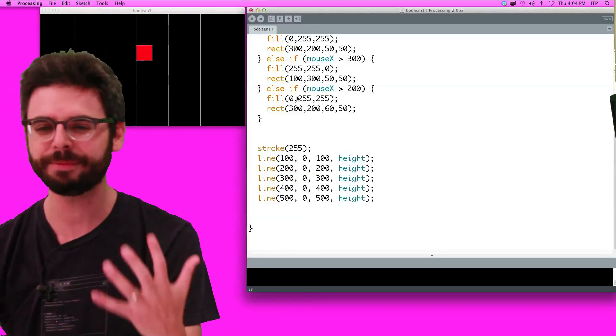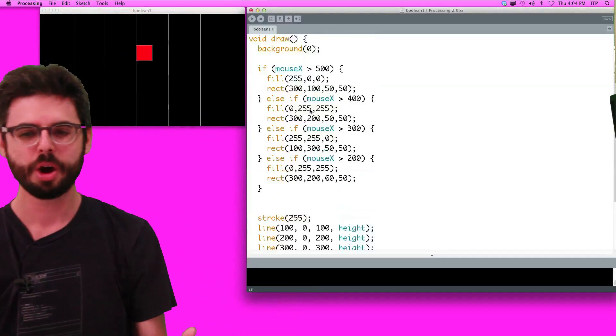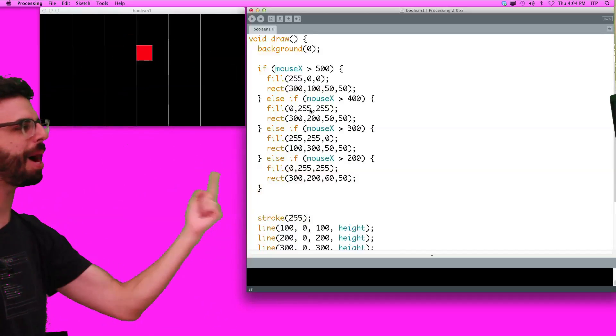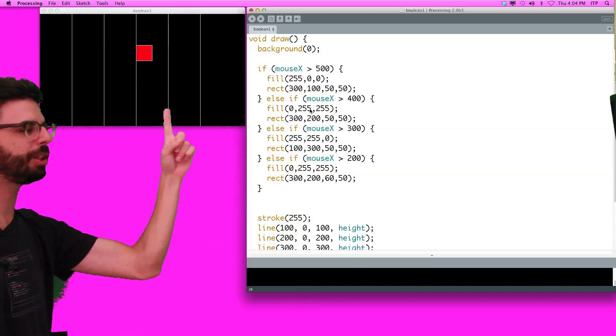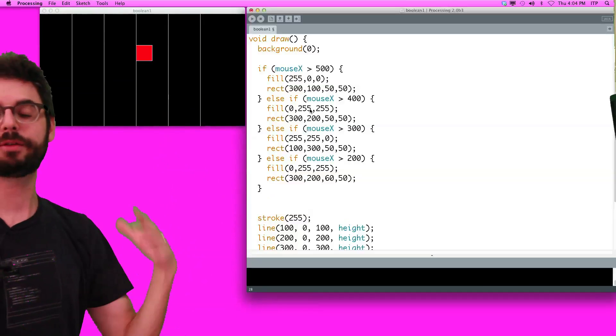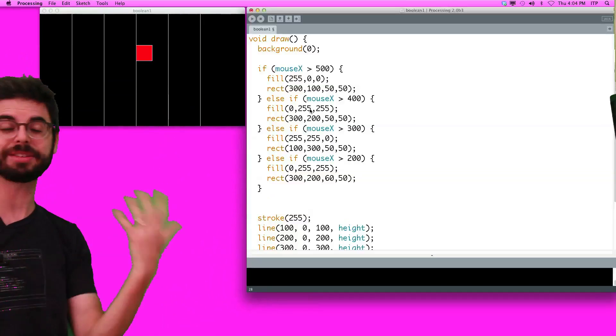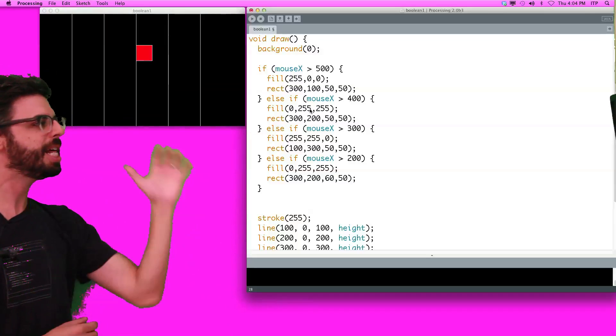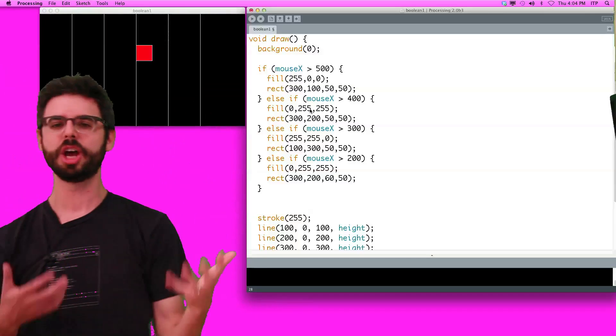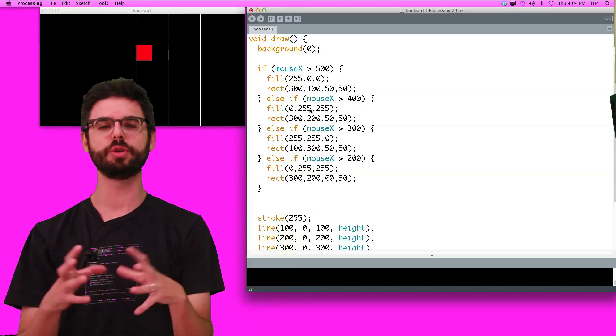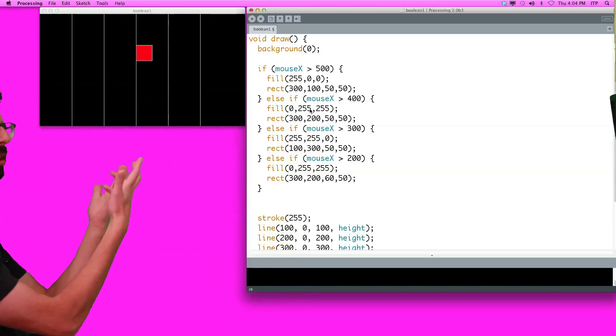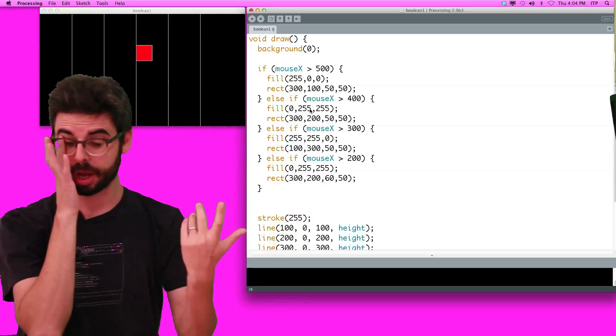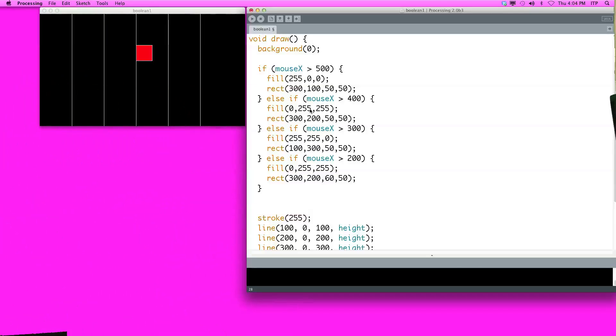The point that we're emphasizing here is that what we're doing is with this if statement, we are creating a set of possibilities, only one of which can be executed. So first we see if we're greater than 500. If that's not true, we see if we're greater than 400. If that's not true, 300, et cetera, et cetera. This is essentially the kind of logic you want to start programming if you want to create rollovers, essentially. We've created these regions that when the mouse is over them, something happened.